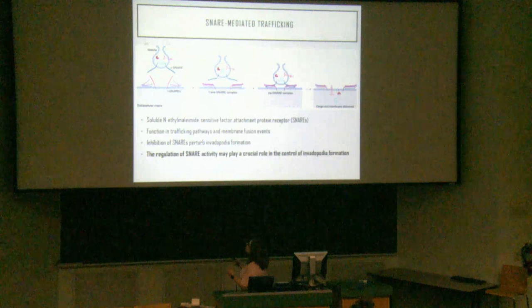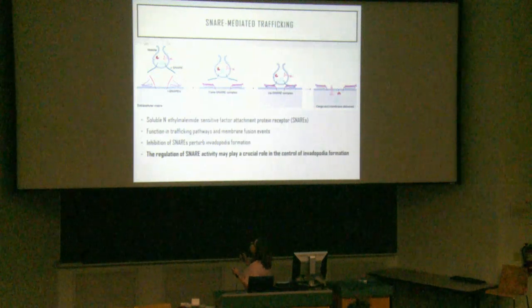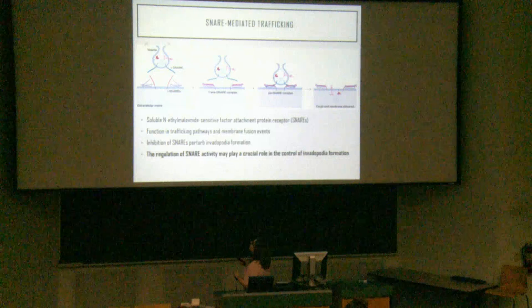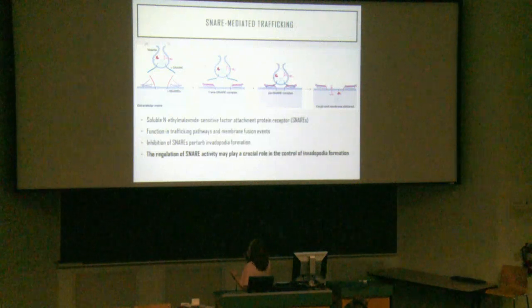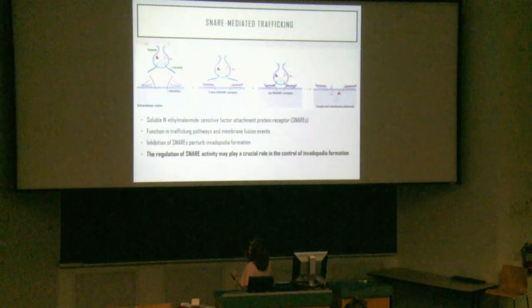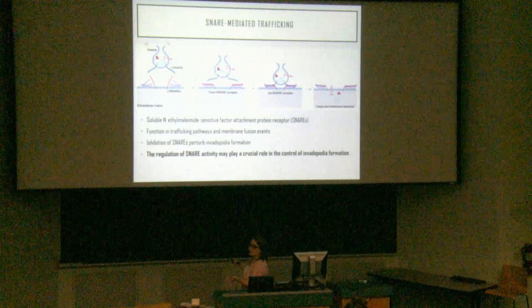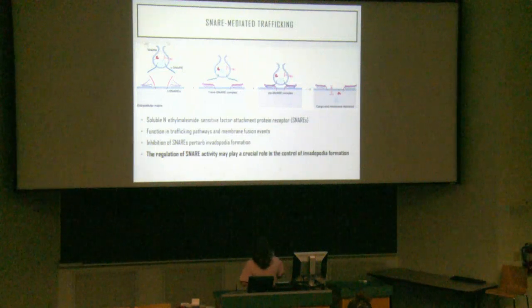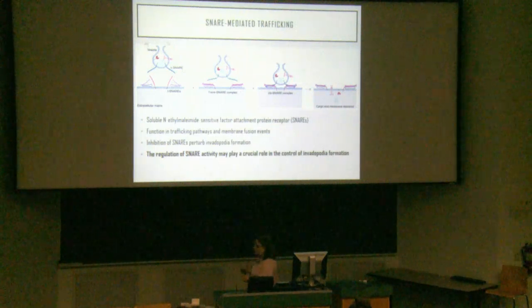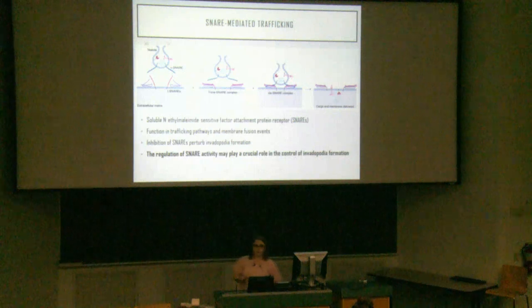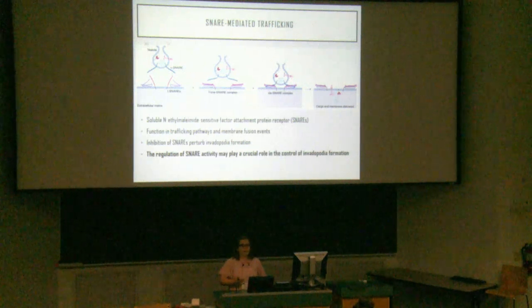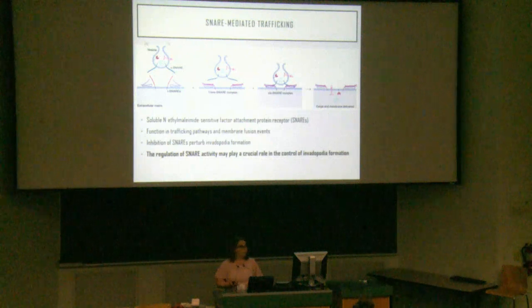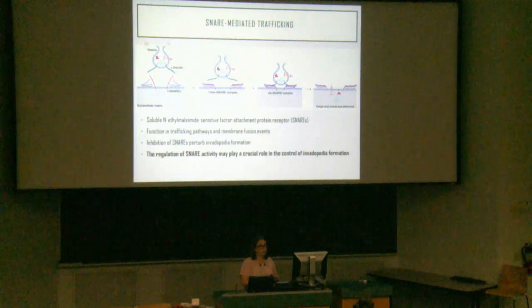On our target membrane we have two T-SNAREs, and on our vesicle we have a V-SNARE. These T-SNAREs interact to form a trans-SNARE complex, which allows delivery of cargo to the specific membrane. It's been found in our lab that by inhibiting specific SNAREs, we actually decrease invadipodia formation.